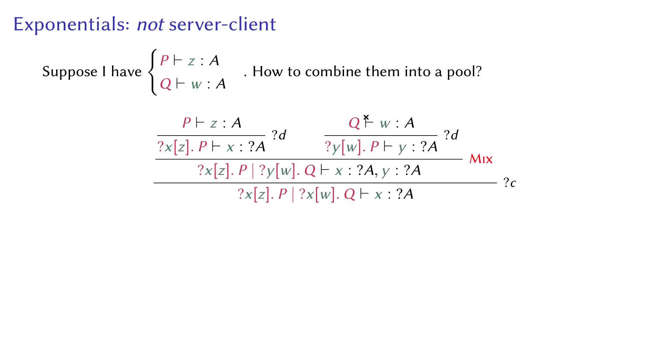You can have this very straightforward derivation, at the end of which we have question mark A, which is a client pool of A. But one notable thing is that we used a mix rule, which is not standard in classical linear logic. It's similar for creating an empty client pool from nothing. We require a mix zero rule, which is also not standard in linear logic.